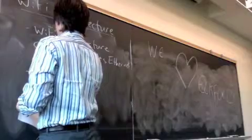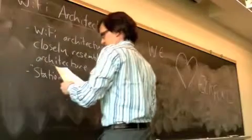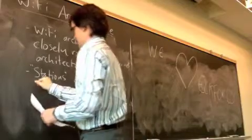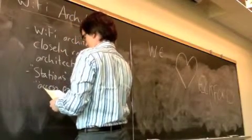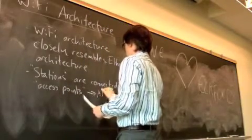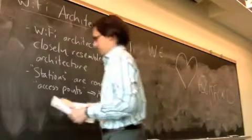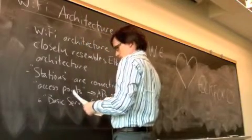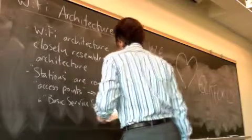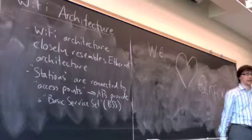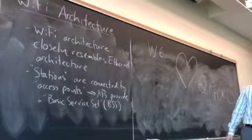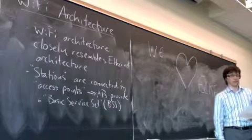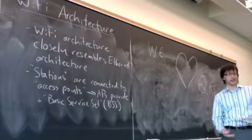So stations - a mobile node here is called a station. Stations are connected to access points. And the access points provide what's called a basic service set, or BSS. So the BSS gives you things like the network name, like I said. It can do tasks such as WDP, take care of security like that. Just the very basics that you need to connect to a Wi-Fi network.